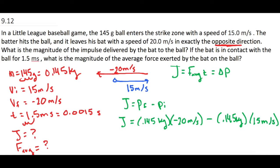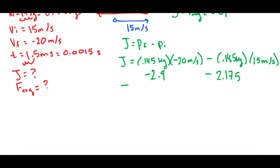Alright, so let me grab my calculator. 0.145 times negative 20 gives us negative 2.9, and that's momentum, so kilograms times meters per second. Minus 0.145 times 15 is 2.175. So if we have negative 2.9 minus 2.175, that gives us J equals negative 5.075 newton seconds.